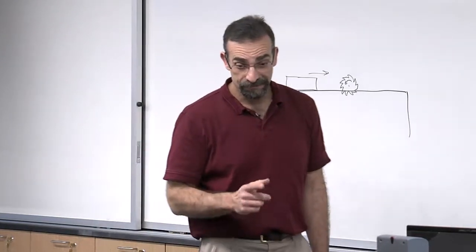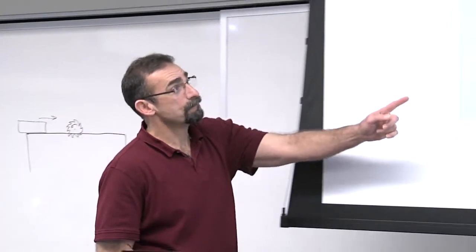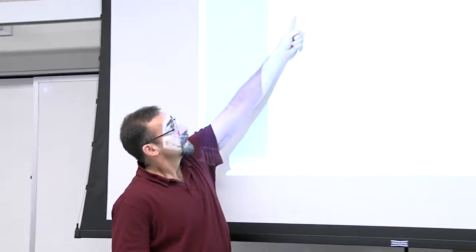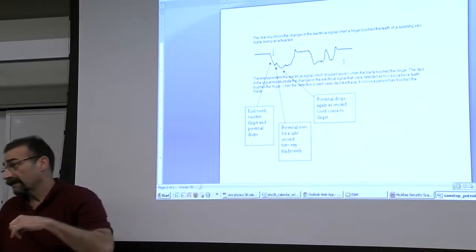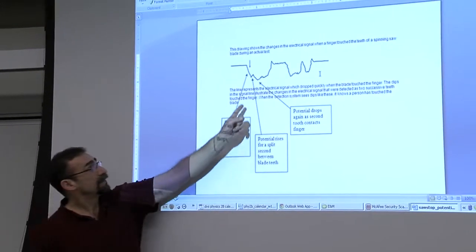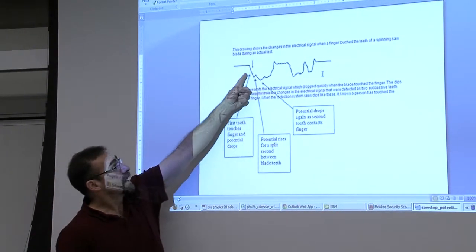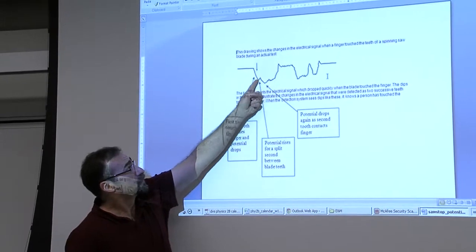So let me show you. That was the first part. So this is the potential. It maintains some constant electrical potential on the blade. If your hand touches it, it drops.